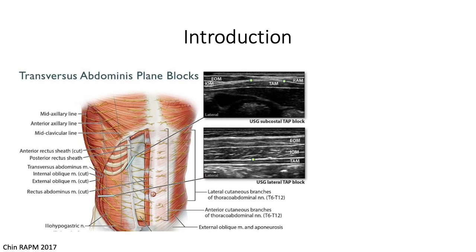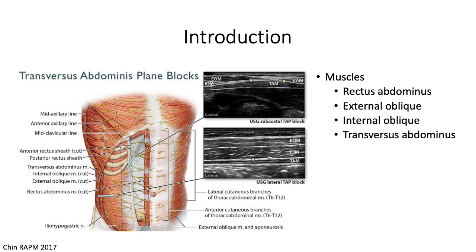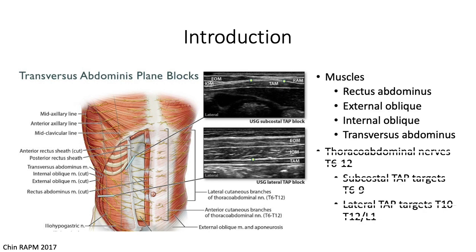As a brief introduction, the main muscles of the abdominal wall include the rectus abdominis, which is near the midline, and then the external oblique, internal oblique, and transversus abdominis. The abdominal wall is innervated by the thoracoabdominal nerves from T6 to T12.